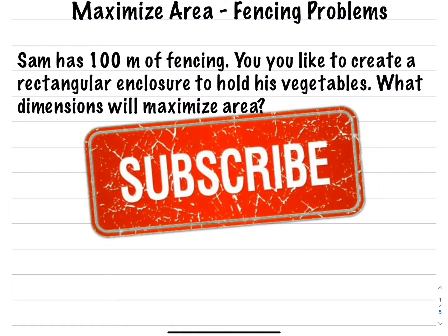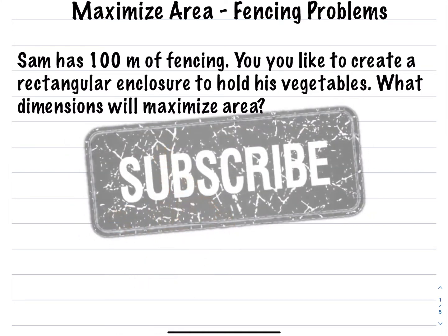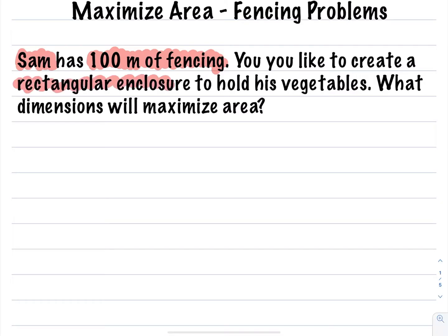In today's video, we're going to be looking at maximizing area, focusing on fencing problems. For our first question, we have Sam. What Sam wants to do is create a rectangular enclosure to hold his vegetables. What are the dimensions that are going to maximize area? Sam has 100 meters of fencing — this is the amount of material he has to work with — and he wants to create a rectangular structure.